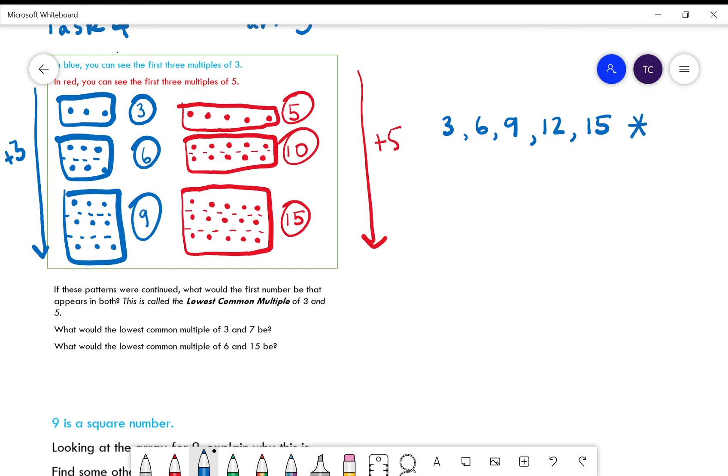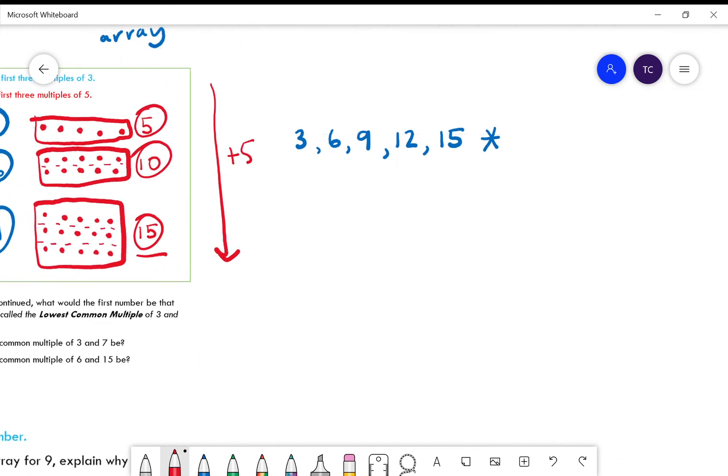And for our multiples of five, well we can see that 15 is there as well. And if I'm looking for the lowest common multiple, or the first number that appears in both, it must be 15.